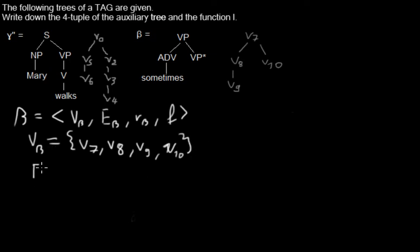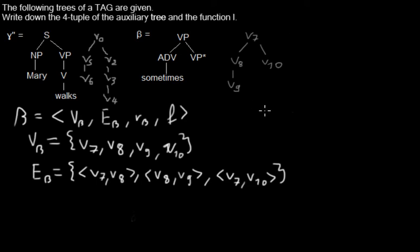Then we have the set of edges and we can just read them and write them down. So it's one edge from V_7 to V_8, one edge from V_8 to V_9, and also one edge from V_7 to V_10. And that are all the edges we have in this auxiliary tree.